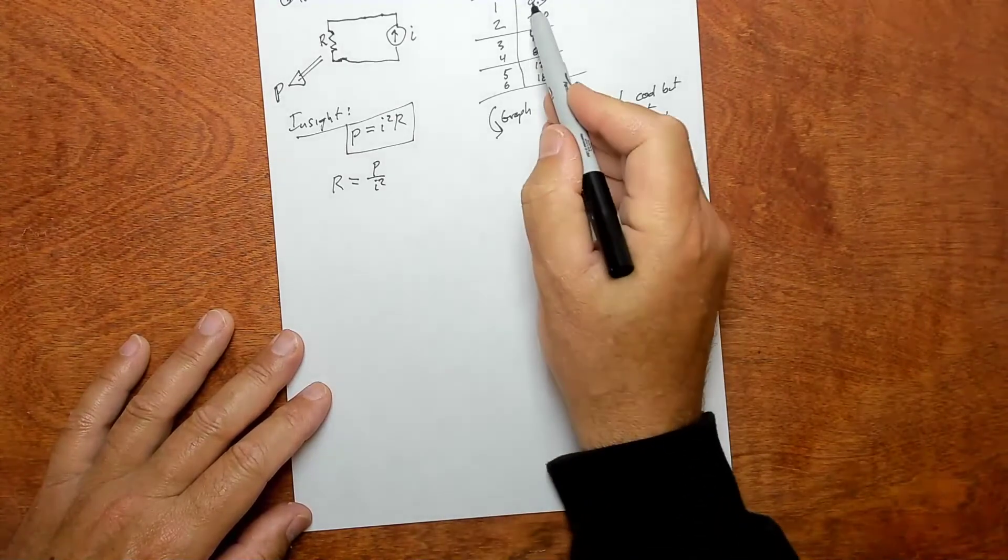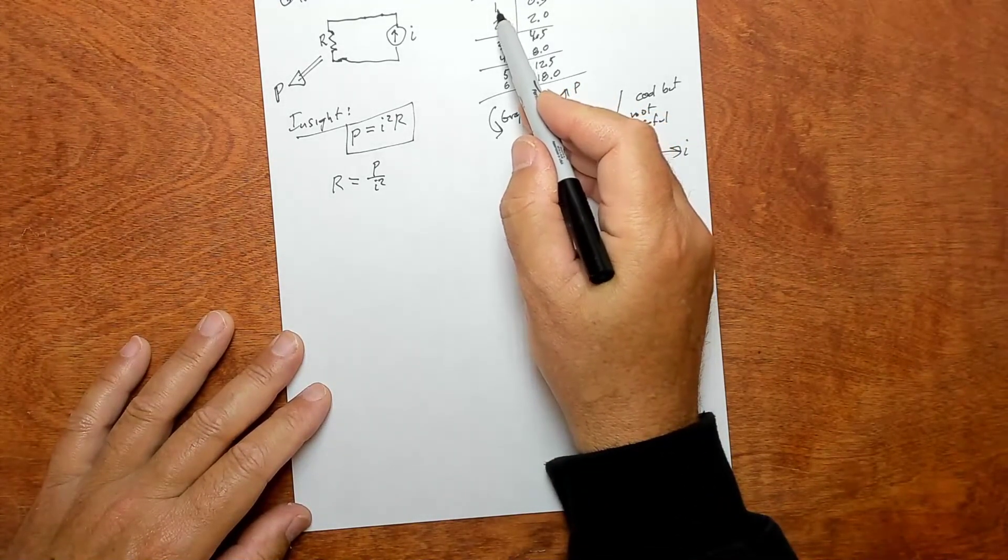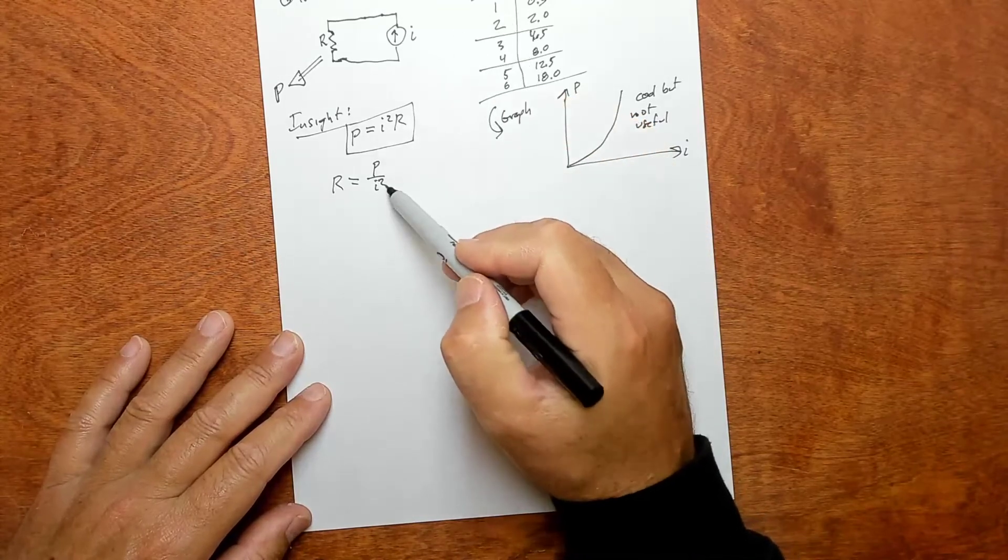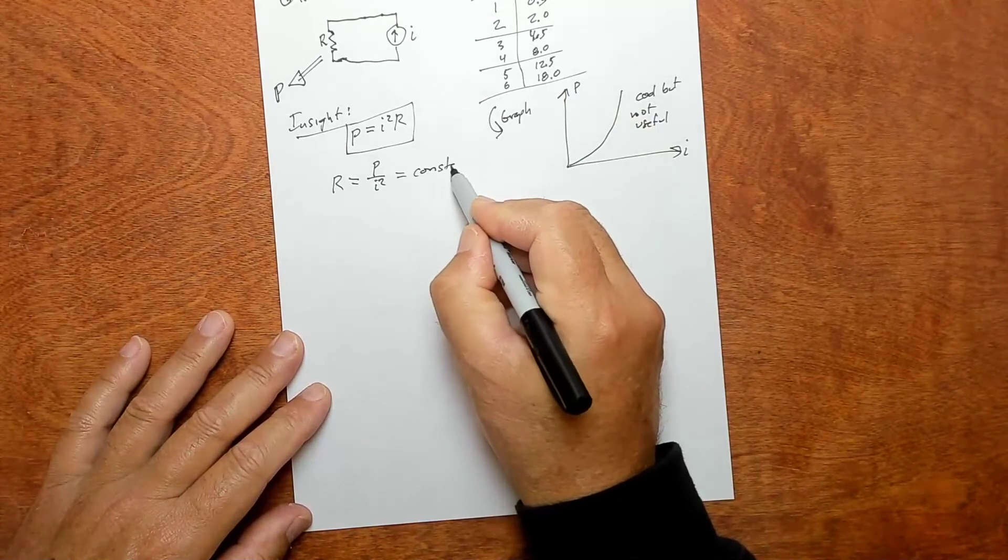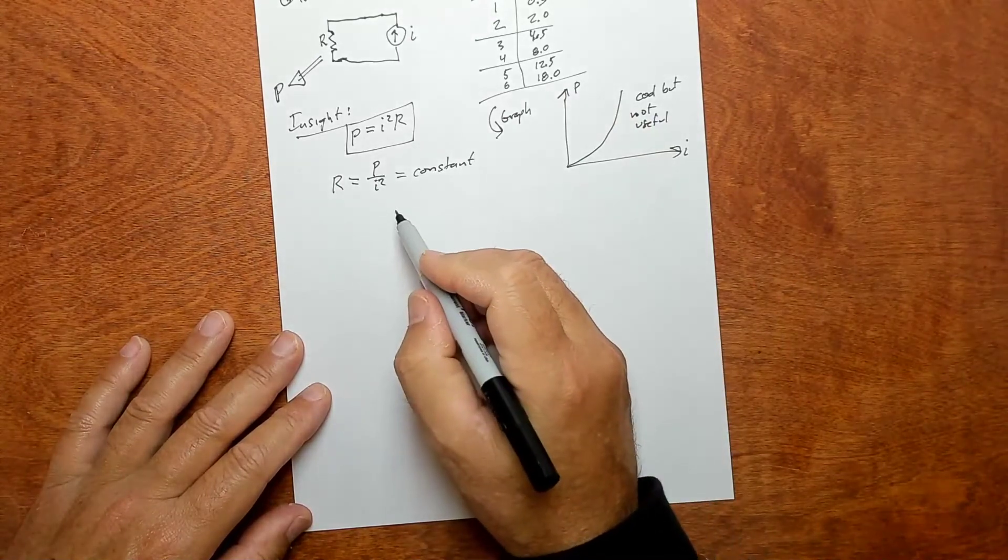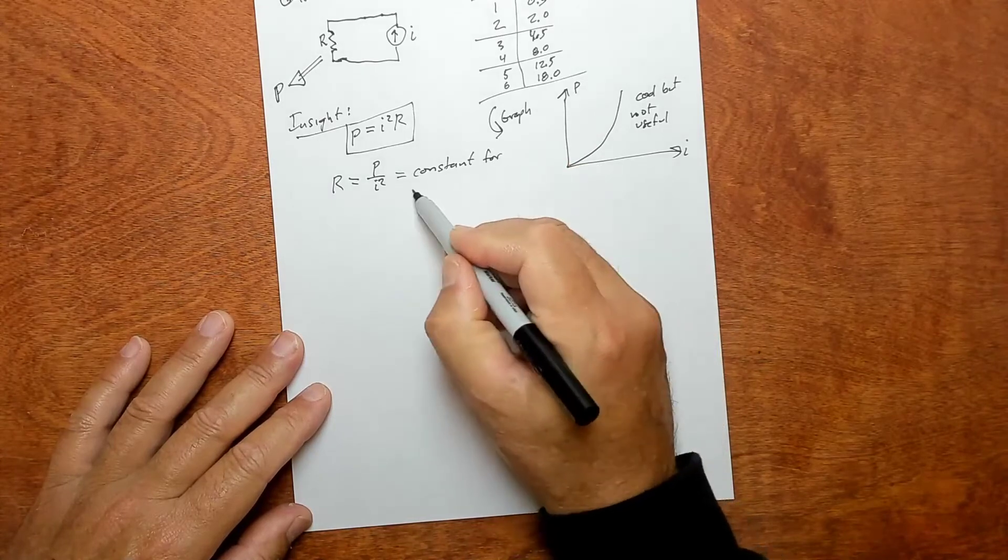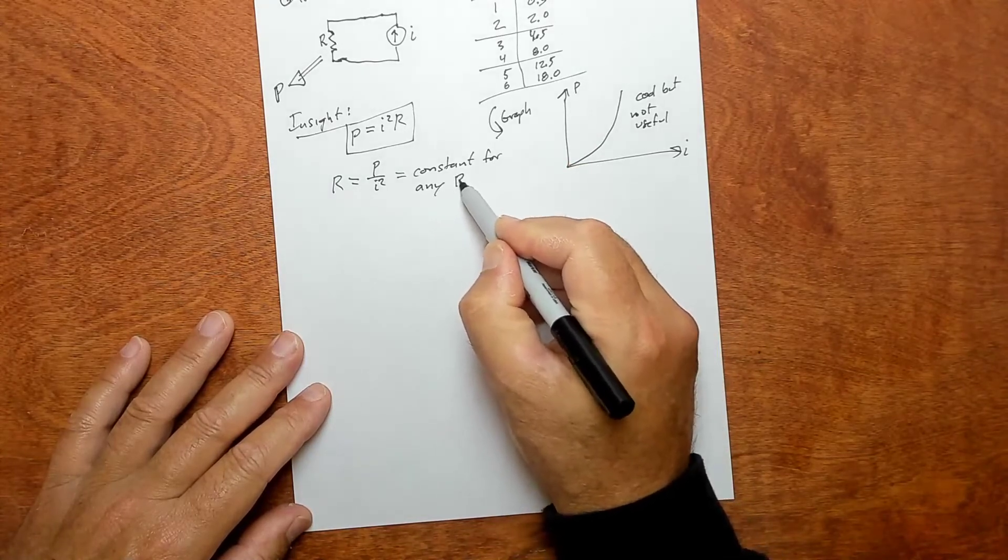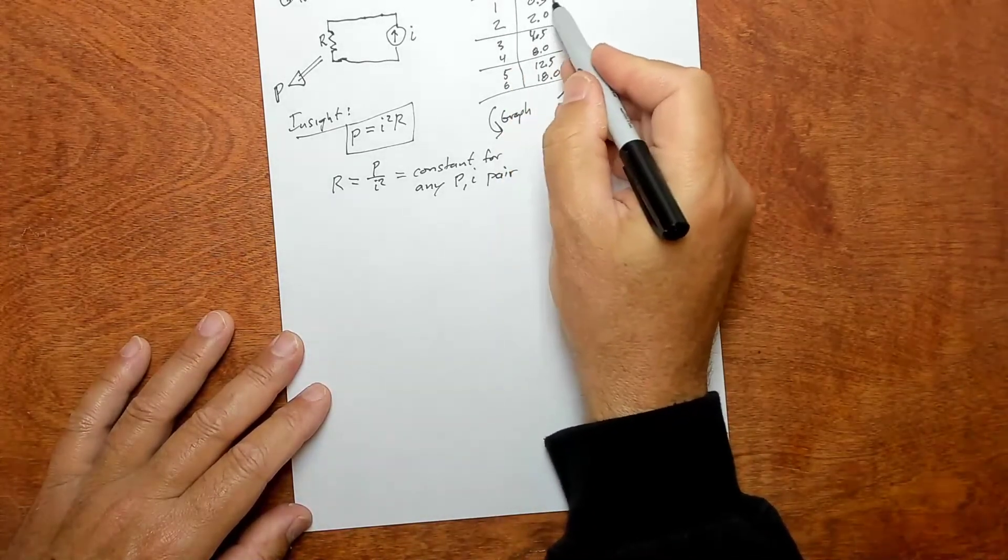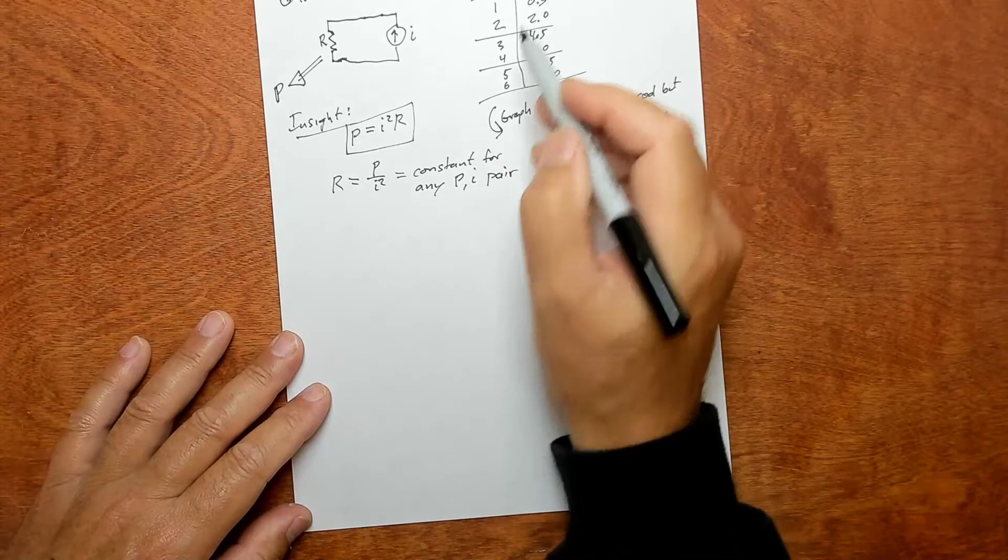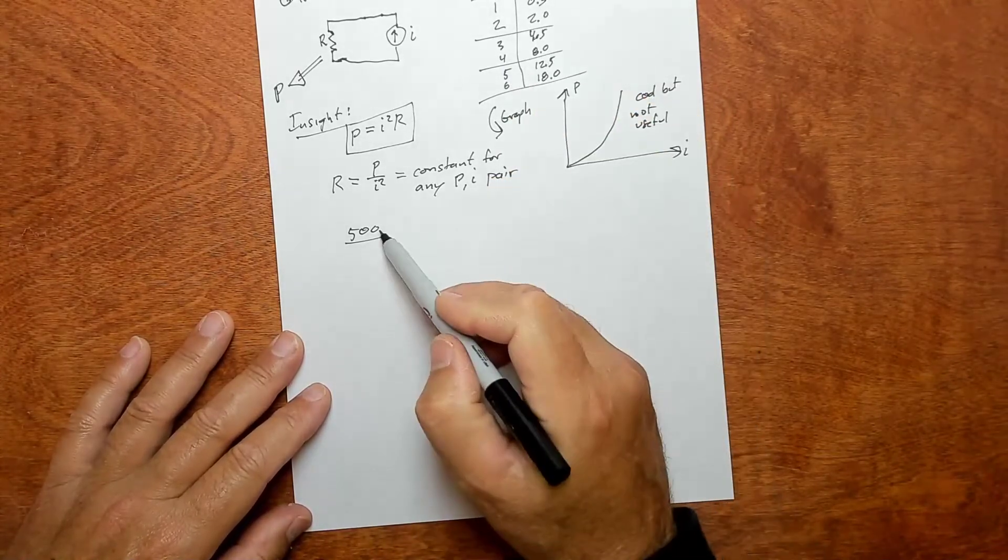Resistors are manufactured with a certain R value, so R is going to be the power over I squared. So what that's saying is that for any given power and current, this ratio should be constant. This is a constant for any P-I pair.